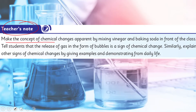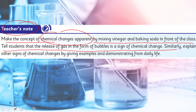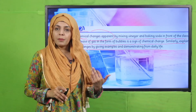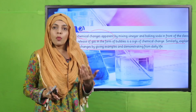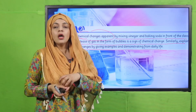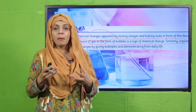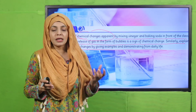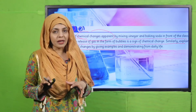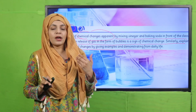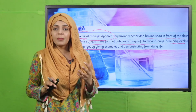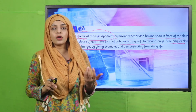Teacher's note: make the concept of chemical changes apparent by mixing vinegar and baking soda in front of the class. Tell students that the release of gas in the form of bubbles is a sign of chemical change. Explain other signs of chemical changes by giving examples from daily life. Hum already is practical ko previous lecture mein perform kar chuke hain — isमें vinegar aur baking soda ko add kiya tha, jis ki wajah se bubbling hui, which was the release of gas — iska matlab ek naya product form ho raha tha, which was a chemical reaction. Students, aap isko akele perform nahi karna — do it under teacher's or parents' supervision.